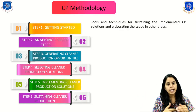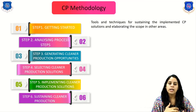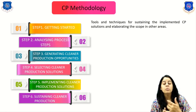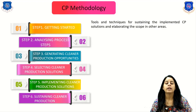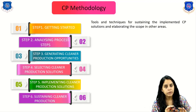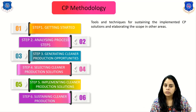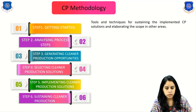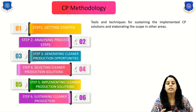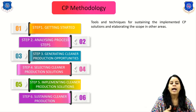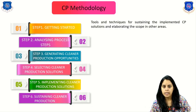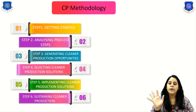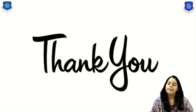In summary, the CP methodology begins with getting started, where we collect data, focus on a particular audit, and form a project team. Then we analyze the process, generate cleaner production opportunities, find solutions for particular industries, implement those solutions, and finally sustain the cleaner production by applying various tools and techniques and elaborating the scope into other industries or areas. I hope you all understood this lecture. Thank you for watching.